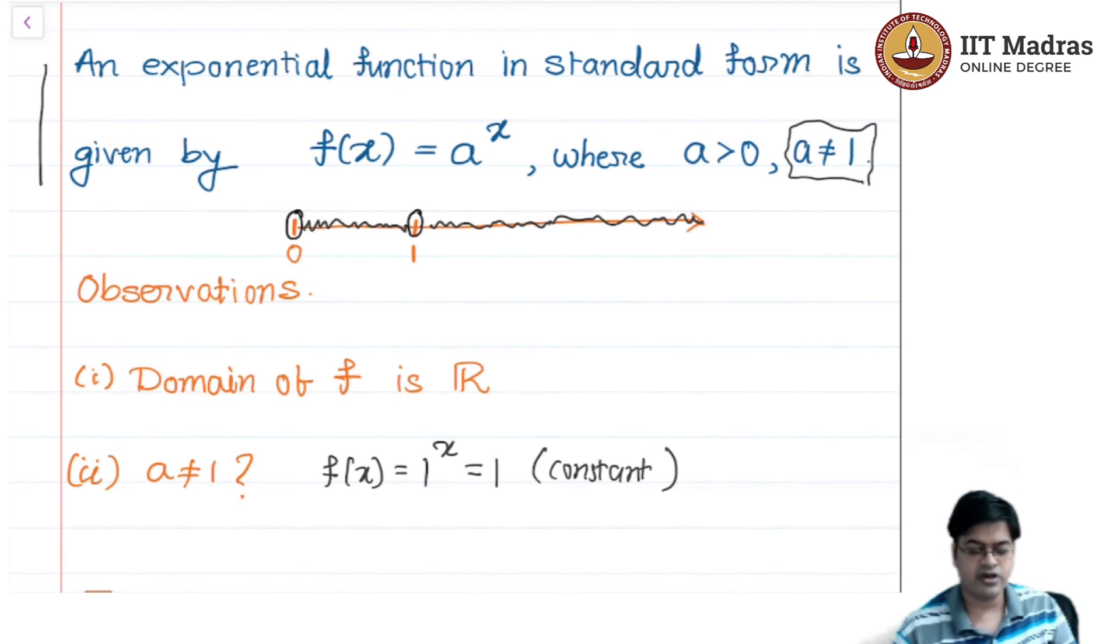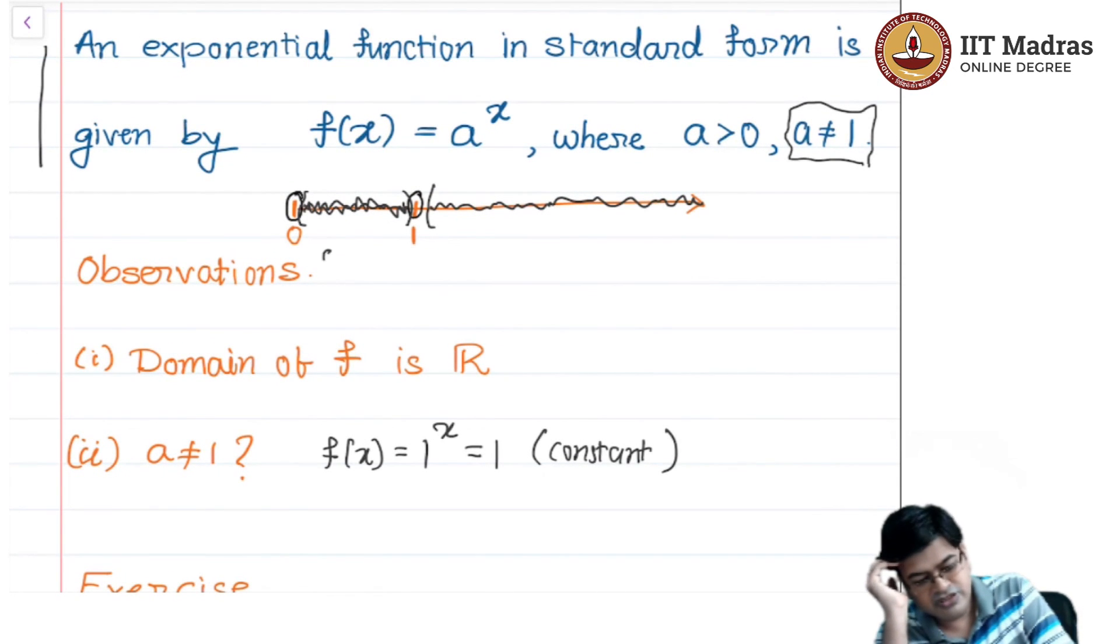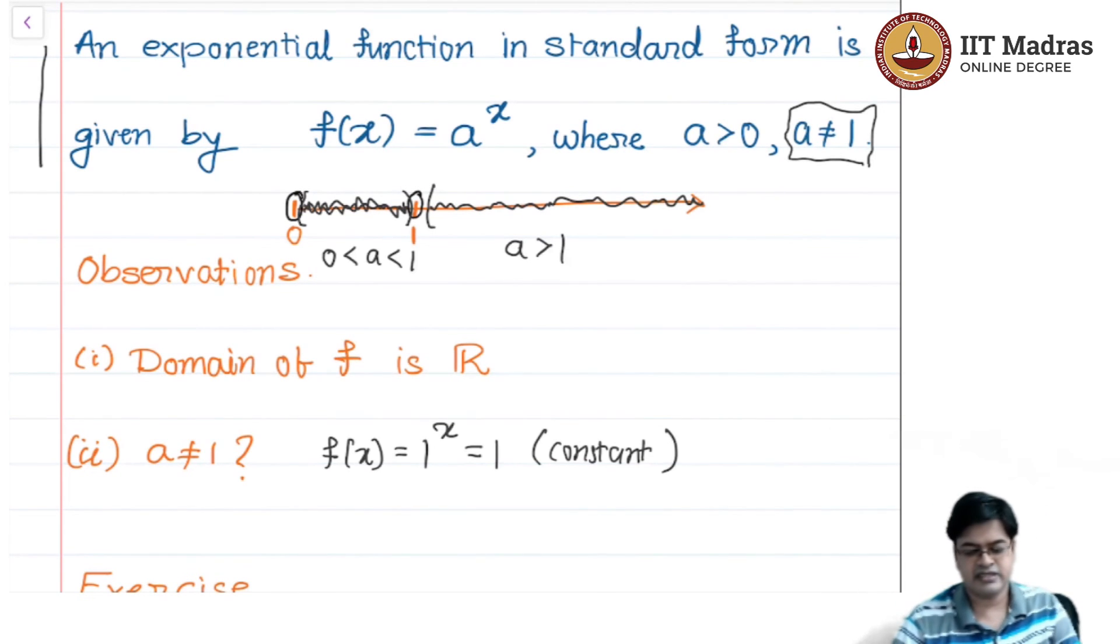Henceforth, we will never talk about a to be equal to 1, a to be equal to 0, or a negative number. If you have a real line, you will have an expression of this form where you are talking about this interval, open interval, and this interval, this is an infinite interval. You have two characterizations, which is 0 < a < 1, and a > 1. These are the two characterizations that you got.